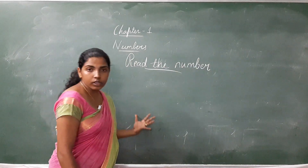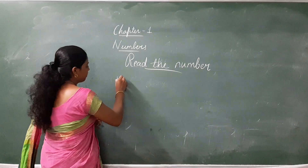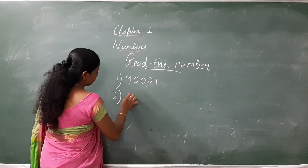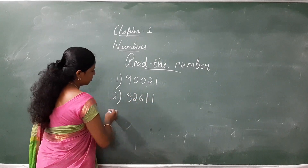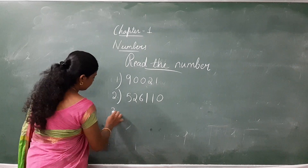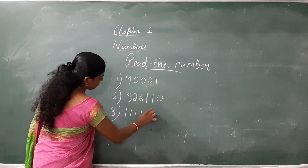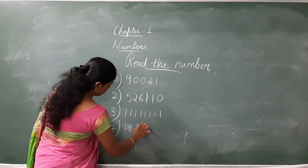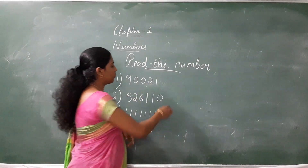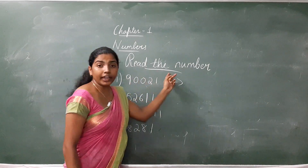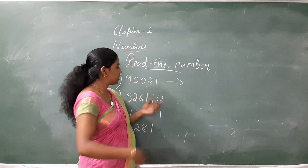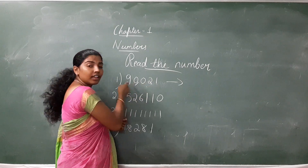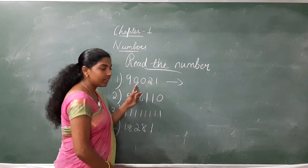Read the number. I will give you some numbers and you have to read them. We have to read the numbers. For that, first we have to put commas after each period: ones, tens, hundred — put a comma — thousand, ten thousand. So the number is 90,021.